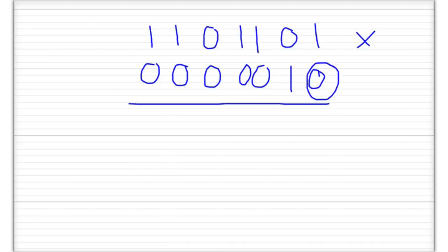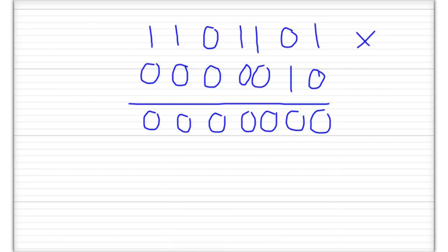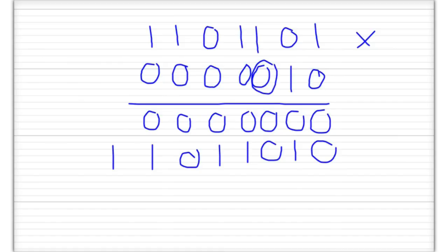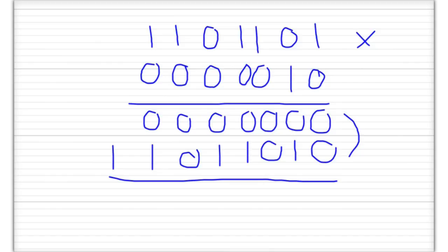We start with this digit here: 0 times 1 is 0, so all of these are obviously going to be 0. Now we move over to the next digit. Remember, we need to shift over to the left one digit. So: 1 times 1 is 1, 1 times 0 is 0, 1 times 1 is 1, 1 times 1 is 1, 1 times 0 is 0, 1 times 1 is 1, and 1 times 1 is 1. All the remaining digits are 0s, so we don't have to do any more multiplication. Now we just need to add up these numbers.